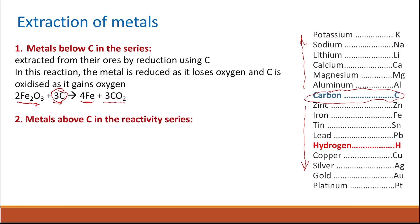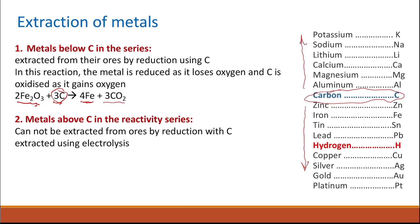Metals which are above carbon in the reactivity series cannot be extracted from their ore by reduction with carbon, because carbon is less reactive than these metals and cannot displace the metals from their oxides. So in this case we use a method called electrolysis. Electrolysis is the method used to extract metals which are above carbon in the reactivity series — such as aluminium, magnesium, calcium, and sodium. These are extracted using electrolysis, not by reduction with carbon.